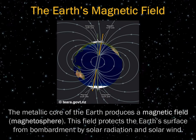The metallic core of the Earth produces a magnetic field, otherwise known as a magnetosphere. This field protects Earth's surface from bombardment by solar radiation and solar wind. The magnetic field is not constant — its strength fluctuates, and the magnetic field can flip over spans of thousands to millions of years. We'll learn more about these changes in the plate tectonics lecture.